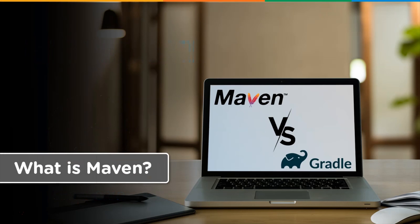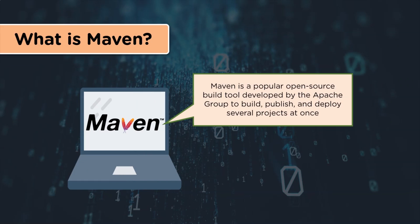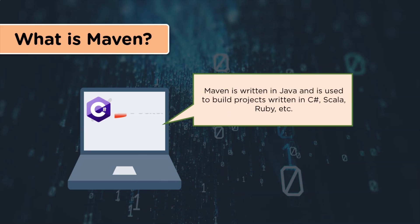Let's now begin with what is Maven. If you are a Java developer, then this build tool would have helped you every now and then. Maven is a popular open source build tool developed by the Apache group to build, publish and deploy several projects at once. The tool is written in Java and is used to build projects written in C#, Scala and Ruby. Maven is based on the project object model and focuses on the simplification and standardization of the building process.